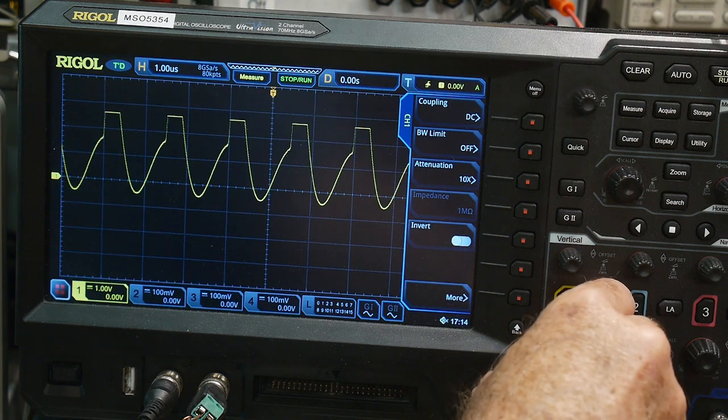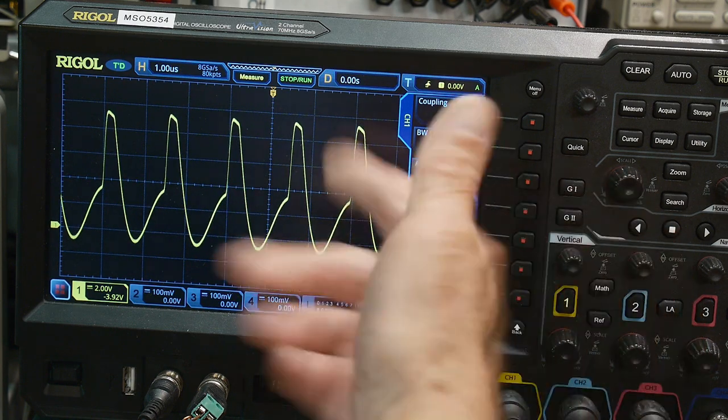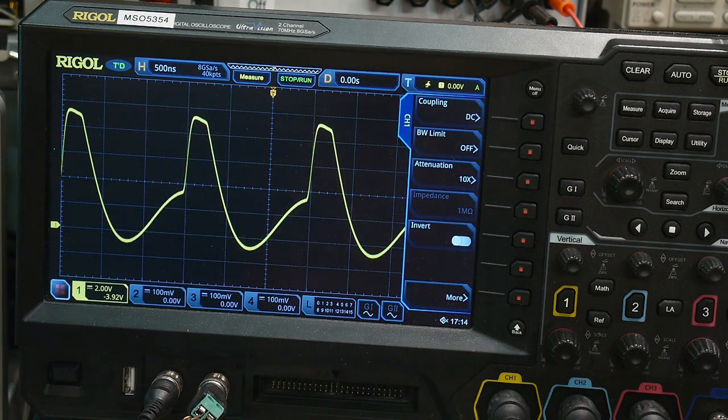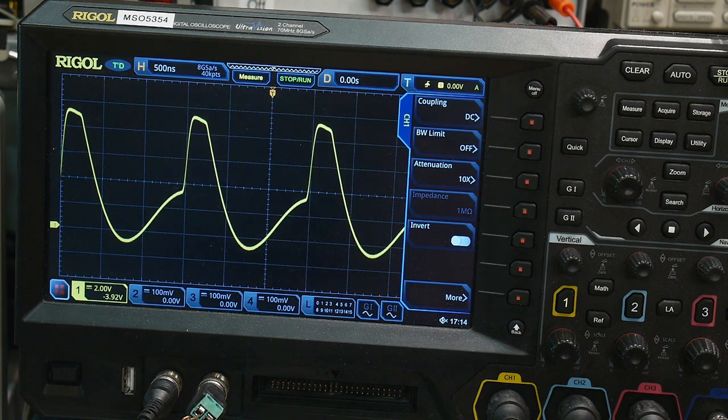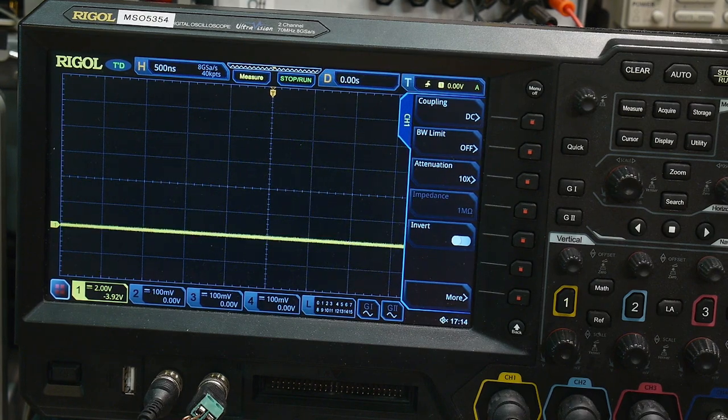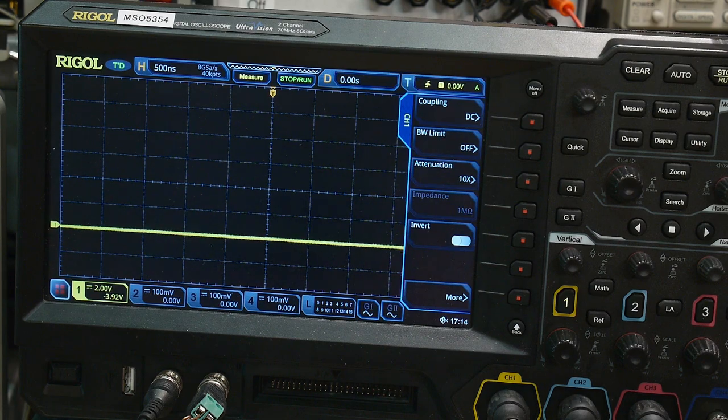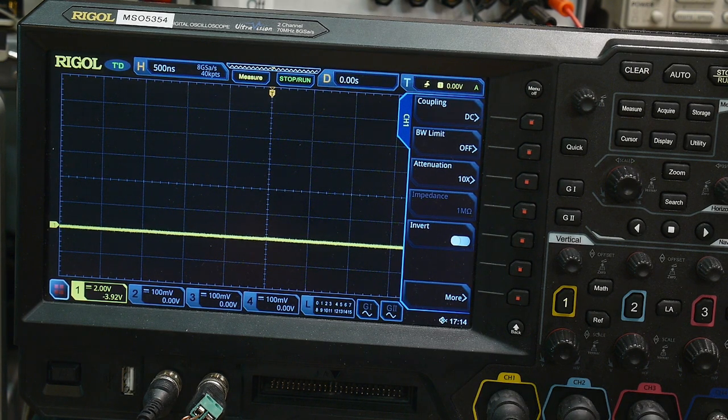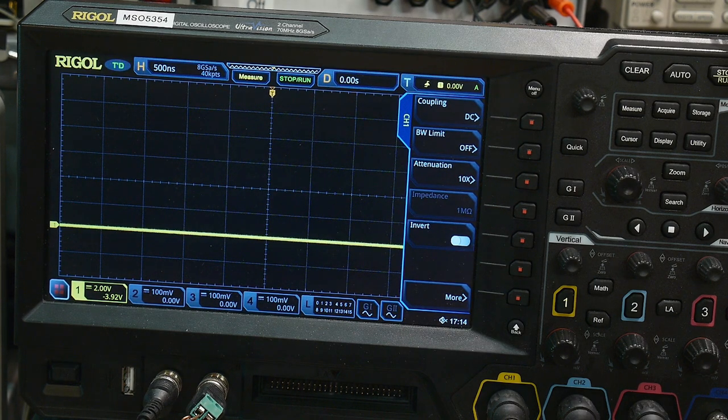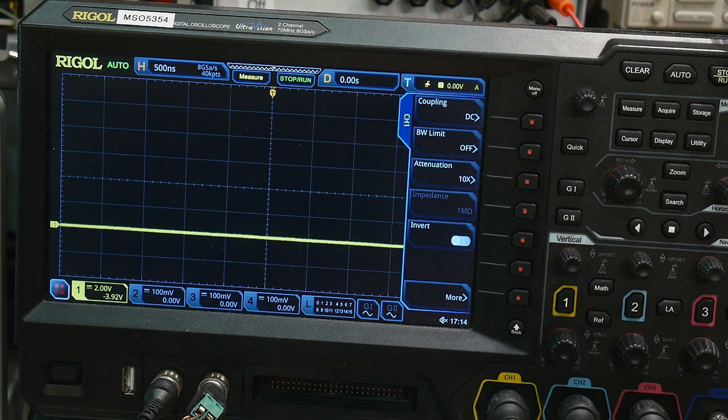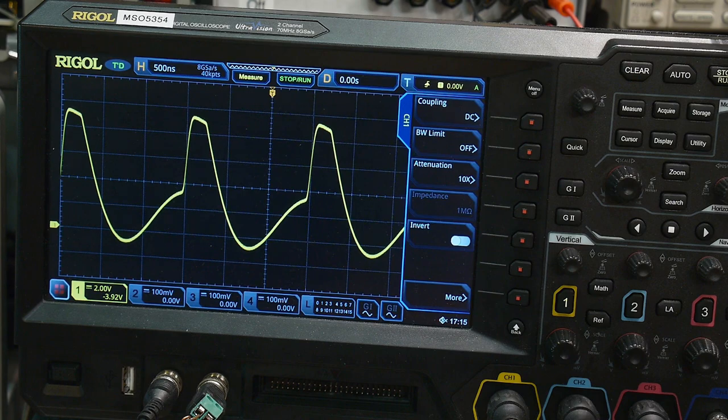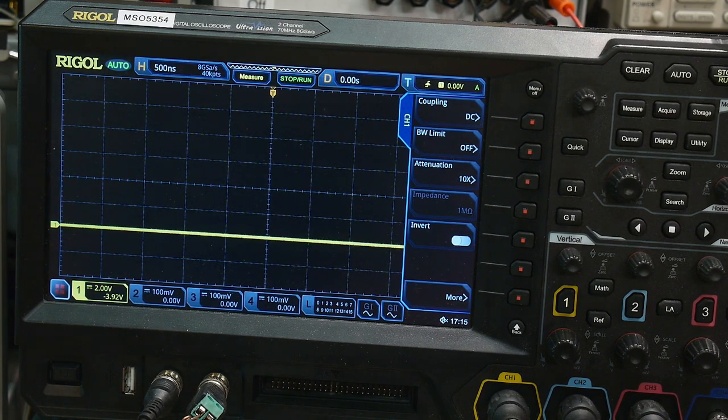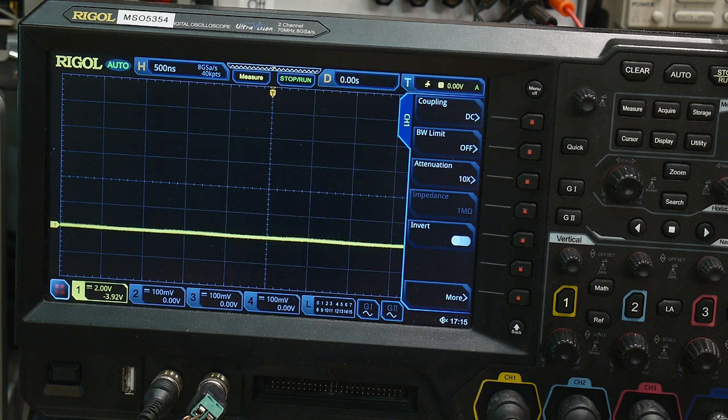We have something here. First we have to tell it we have a times 10 probe. Let's make it smaller, bring the ground reference down, and there we go, we have an oscillation. We have this spike down here. I did find my little spring for the scope probe, so let's put the spring on it to shorten our lead length.